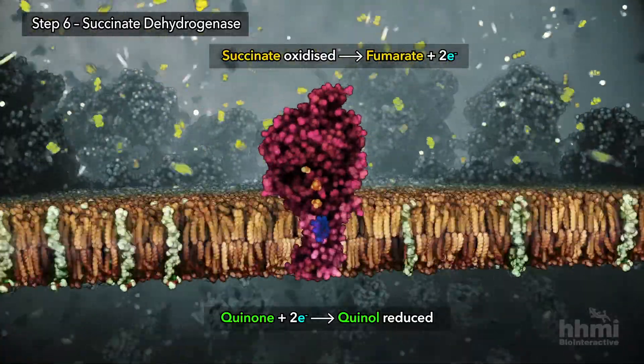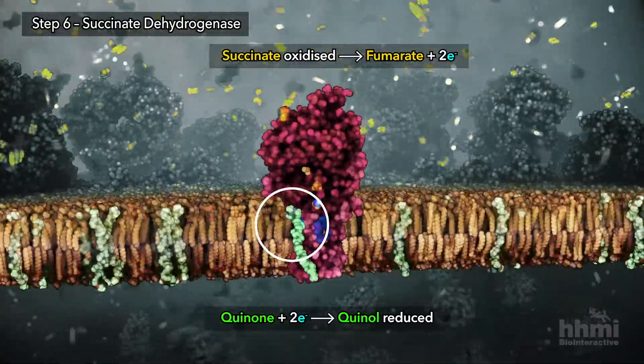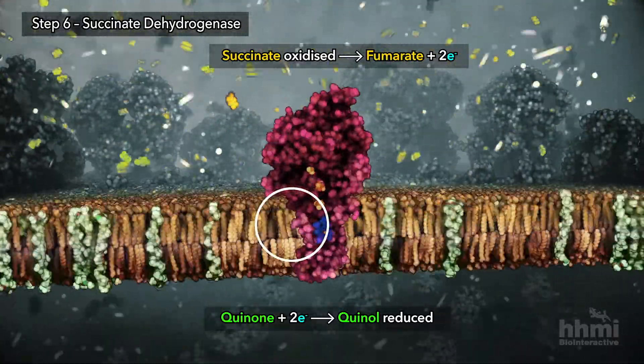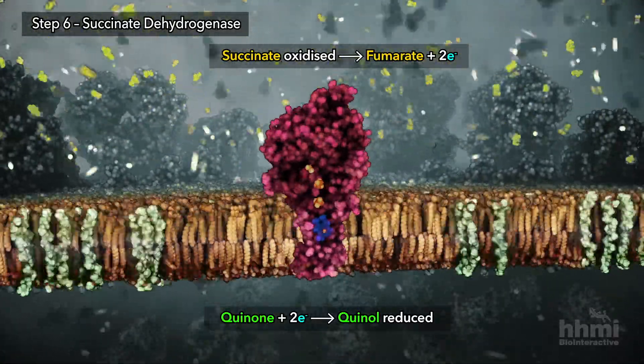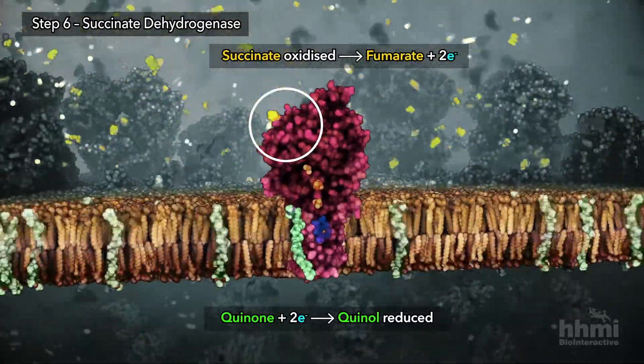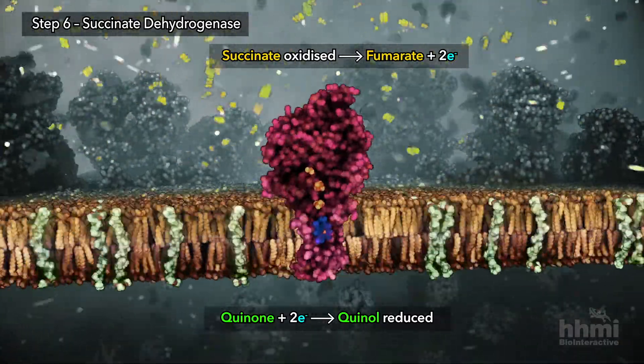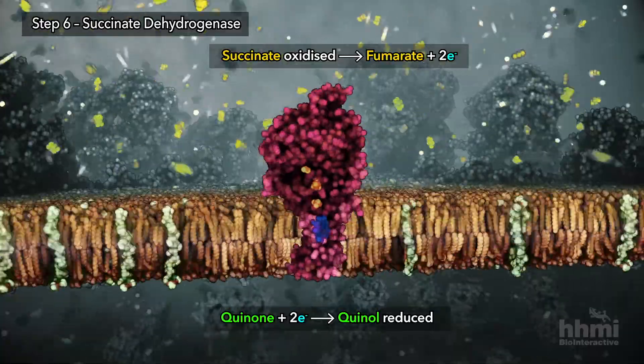The enzyme catalyzes the oxidation of succinate to create fumarate, releasing two electrons that hop through the interior to coenzyme Q, which is reduced. Coenzyme Q travels in the membrane carrying the electrons to nearby enzymes of the electron transport chain.